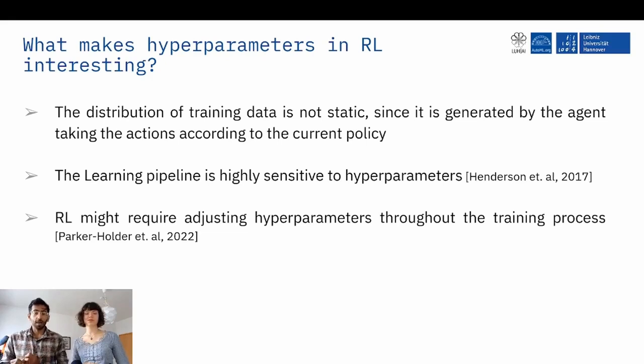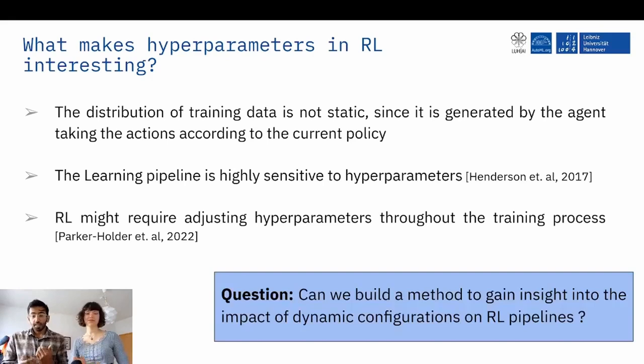And Parker Hoder et al. also argued for the requirement of adjusting hyperparameters throughout the training process. So we ask ourselves the question, can we build a method to gain insight into the impact of dynamic hyperparameters onto the reinforcement learning pipeline?